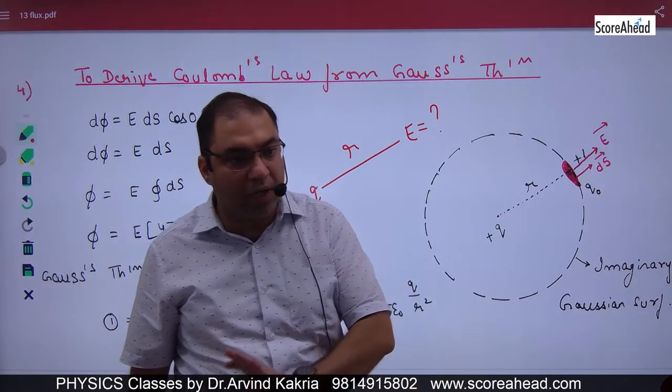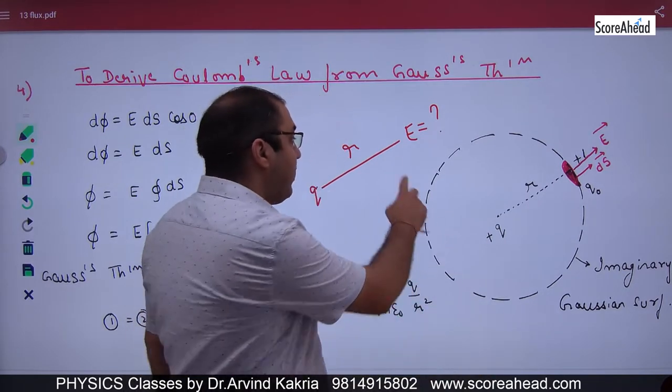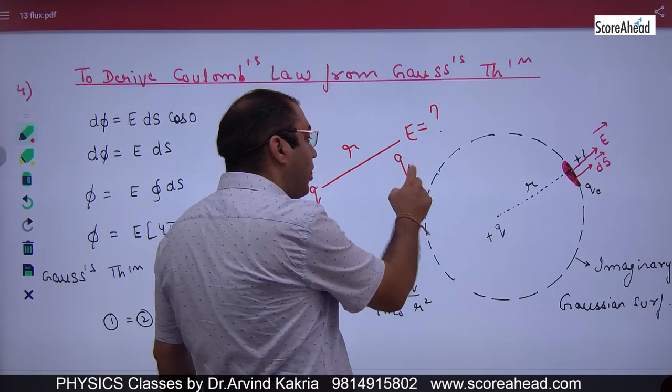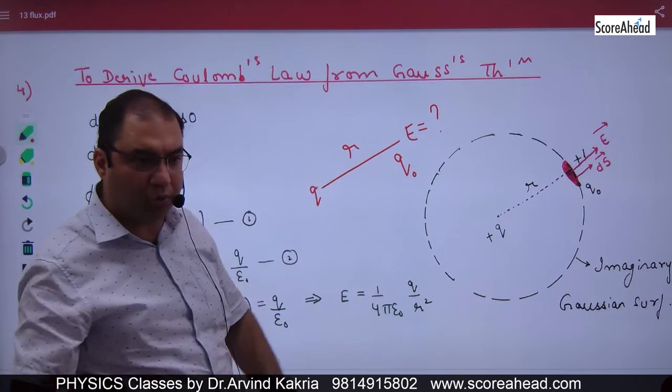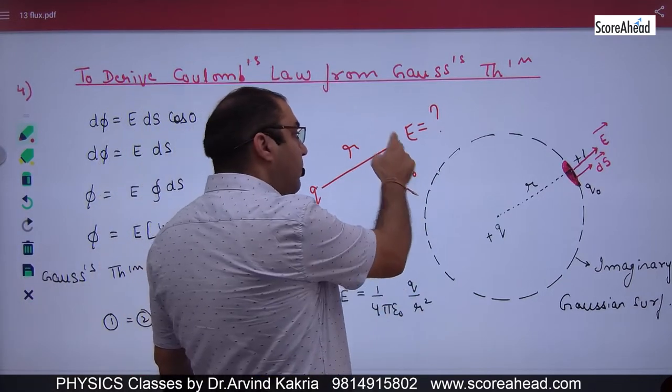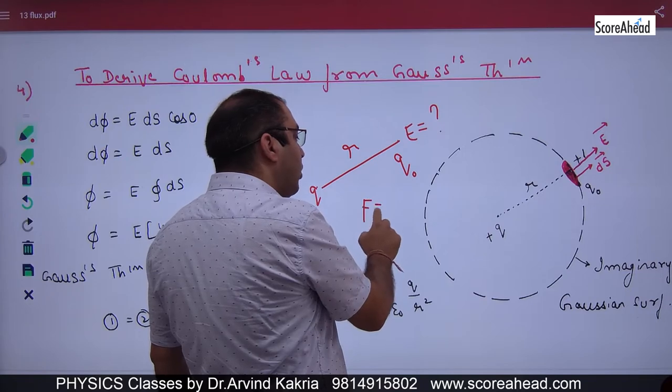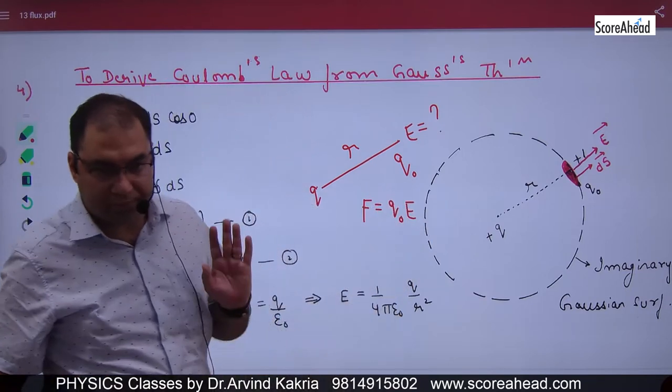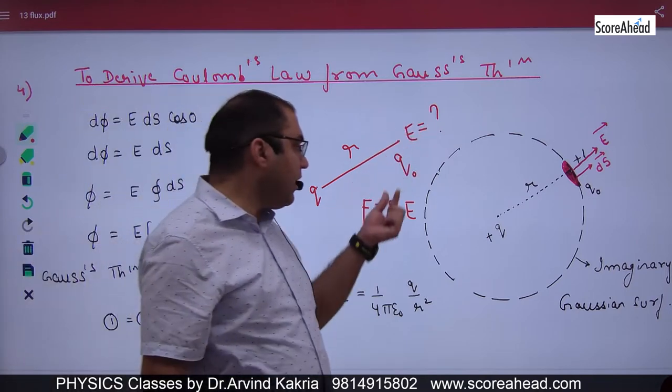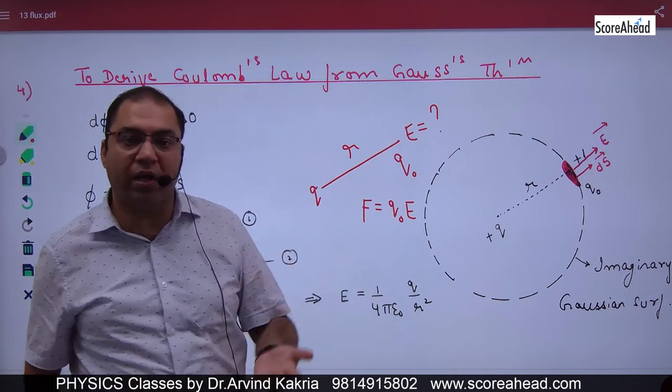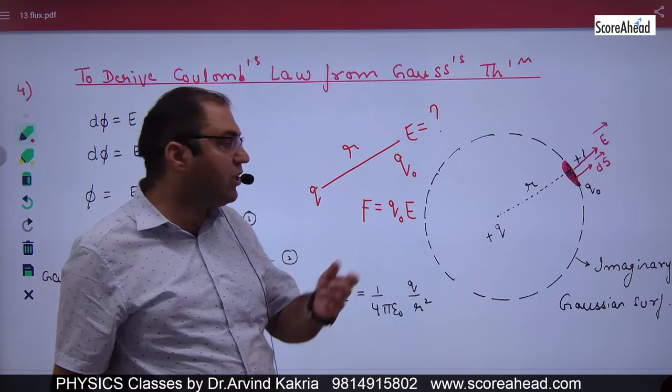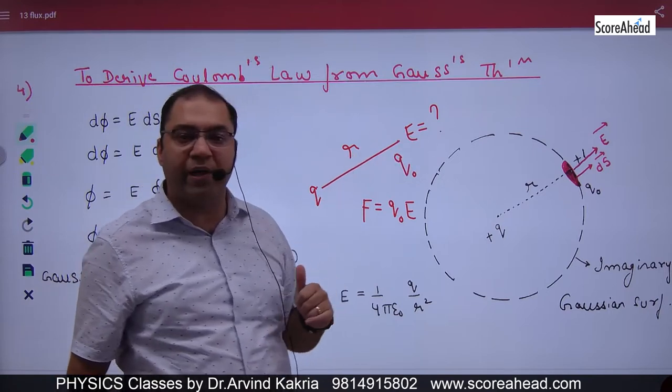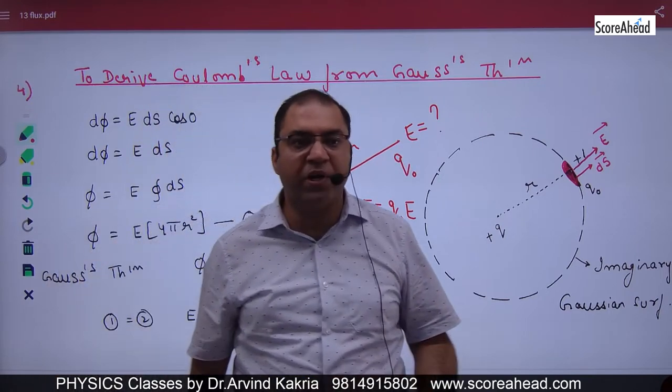So you first use Gauss theorem. Then I will put an imaginary charge or a test charge here, and I will ask what will be the force on this q0? The answer is q0 into E. And when I put the value of E here, the answer should be 1 by 4π epsilon 0, q into q0 divided by r square. Then you will prove your Coulomb's law.